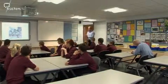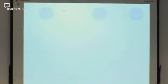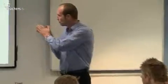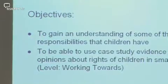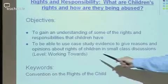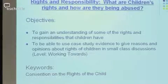Jamie asks: 'According to this slideshow, whose rights and responsibilities — what type of people are we looking at today?' A student answers: 'Children.' Jamie confirms: 'This lesson is specifically looking at rights and responsibilities of children.' The objectives are: to gain an understanding of some of the rights and responsibilities children have, and to use case study evidence to give reasons and opinions about children's rights in small class discussions. The second objective was directly linked to raising attainment.